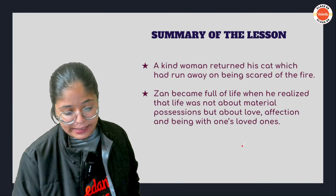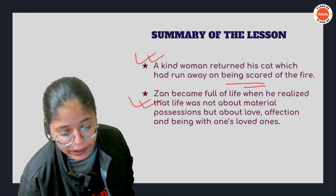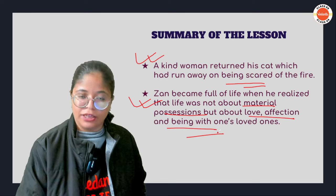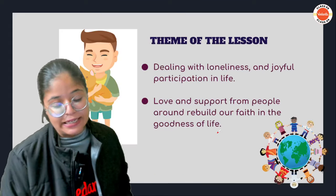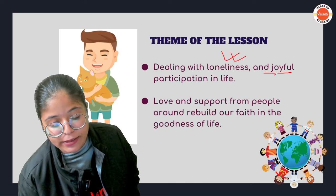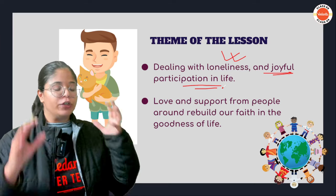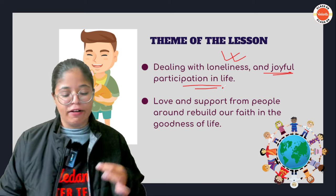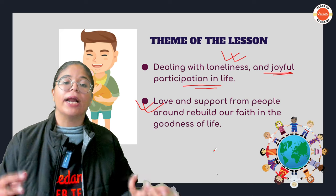The woman who returned his cat made him realize that his life, which had been turned upside down, was about more than just material possessions — it showed him how important love, affection, and loved ones are in life. The theme of this lesson is how to deal with loneliness and the value of joyful participation — if you get love and support from others, you can make your life so much better.